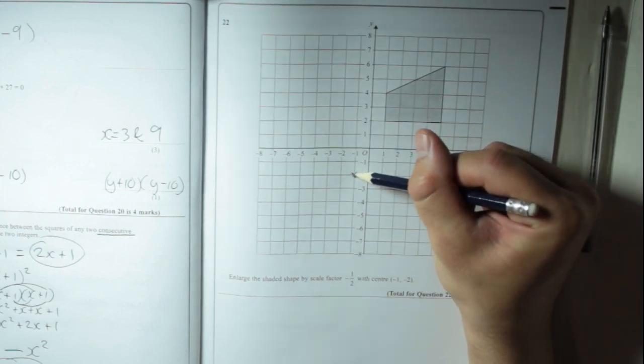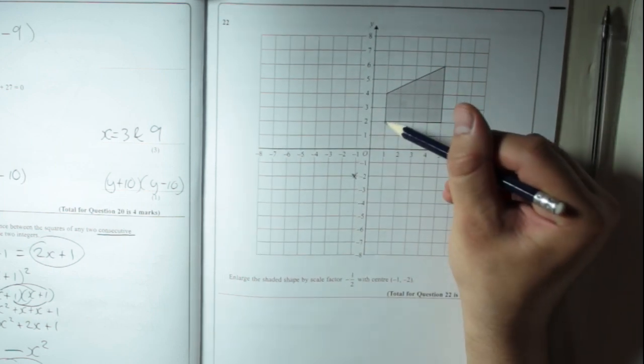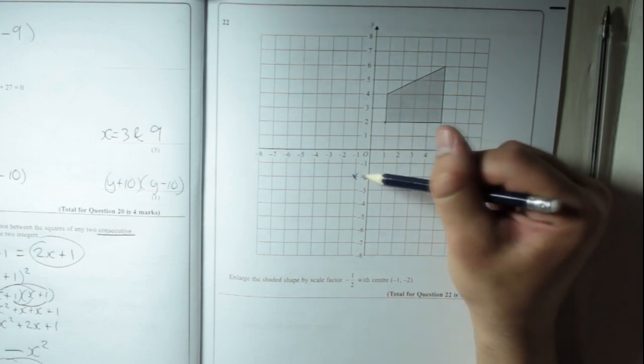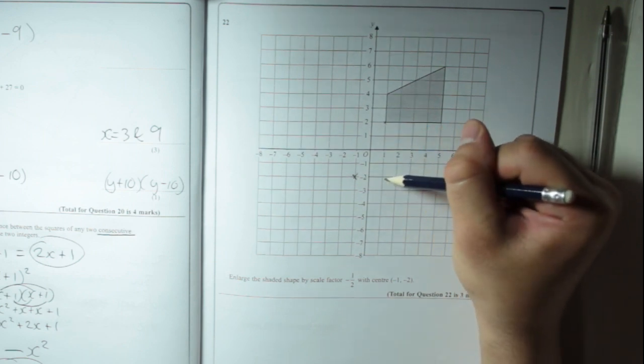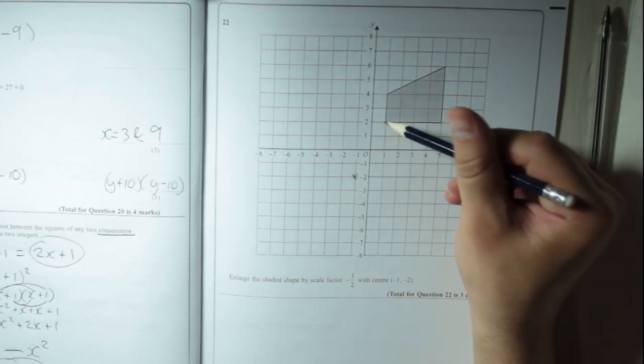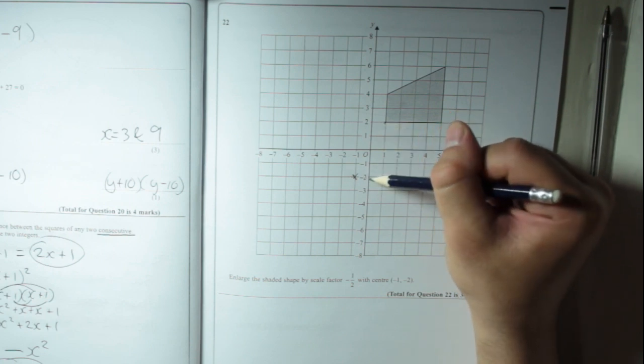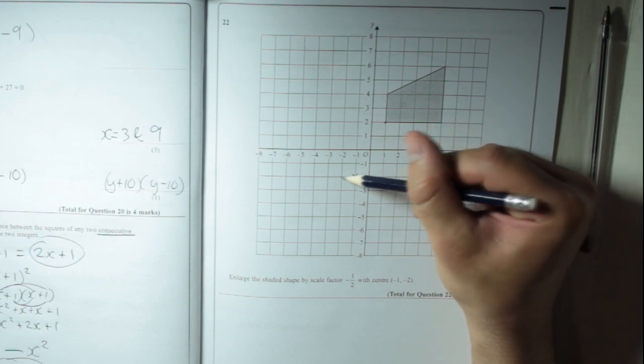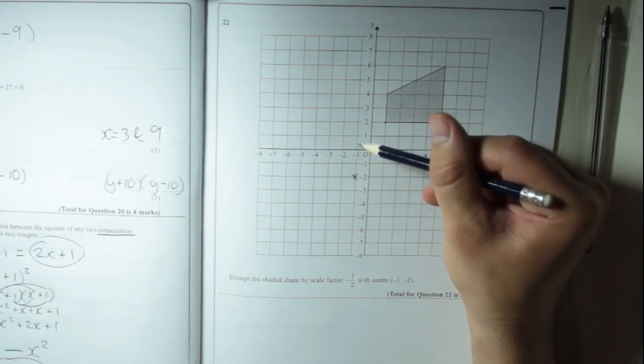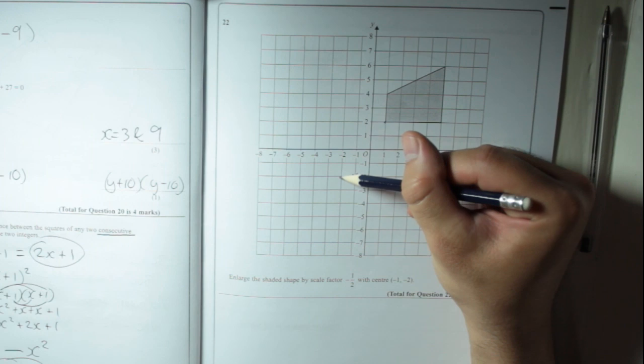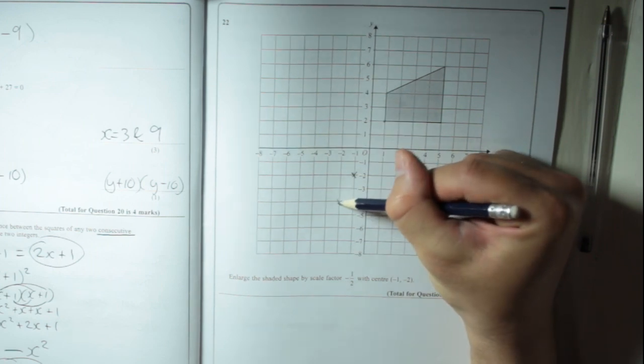So from this point here, that's the centre of enlargement, to that corner there is 2 right, 4 up. If we halve that, you get 1 right, 2 up. But then we need to reverse it. Rather than going 1 right, we go 1 left. And rather than going 2 up, we go 2 down. So 1 left, 2 down. So that's a point there.